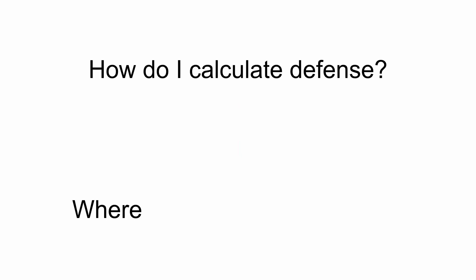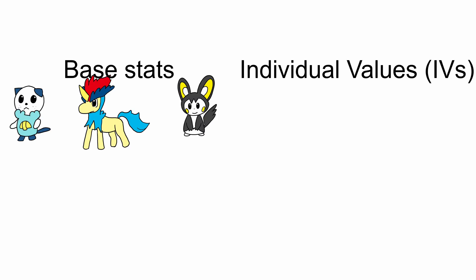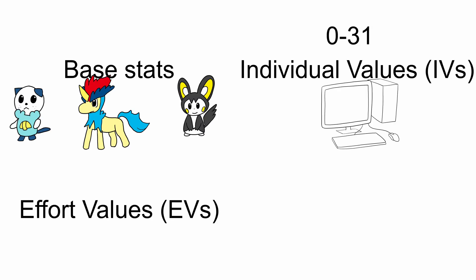This begs the question, where do the attack and defense stat numbers even come from? And with that, there are four new factors to consider. Base stats depending on the Pokemon, individual values or IVs that are random from 0 to 31, effort values or EVs that can range from 0 to 255, and nature.